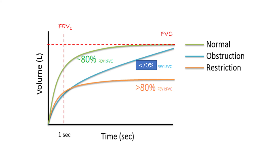Next is FEV1, which is forced expiratory volume in the first second — the volume of air expired in the first second of a forceful expiration. In normal lungs, the ratio of FEV1 to FVC is around 80%. When there is an obstruction, as in obstructive lung diseases, the time taken to fully expire is prolonged, so the FEV1 to FVC ratio is reduced. In severe airway obstruction, FVC may also be reduced, but FEV1 is reduced even further, so the ratio remains low.